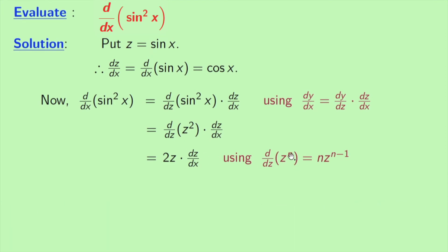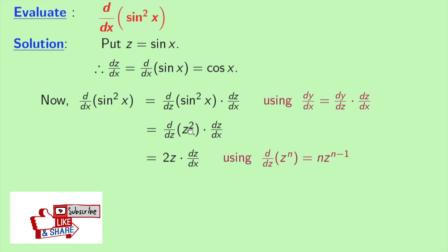Using the rule d/dz of z to the power n is equal to n times z to the power n minus 1. Here n is 2. And dz/dx remains the same.